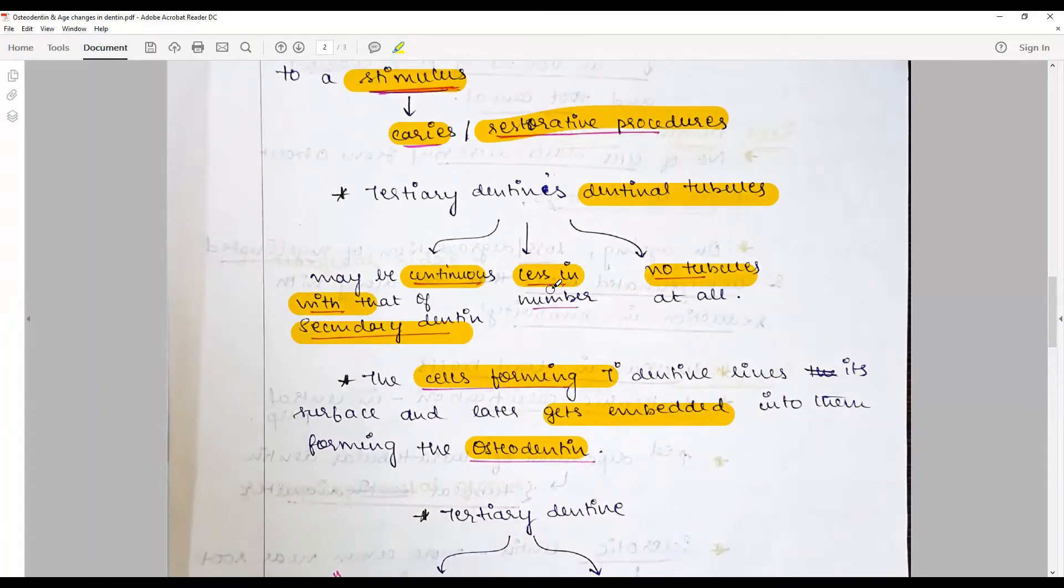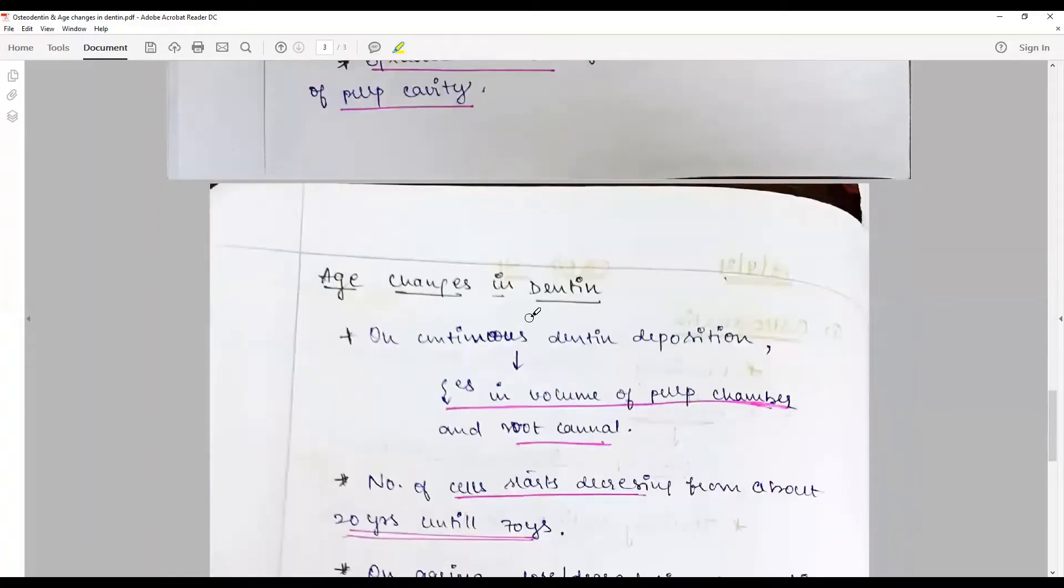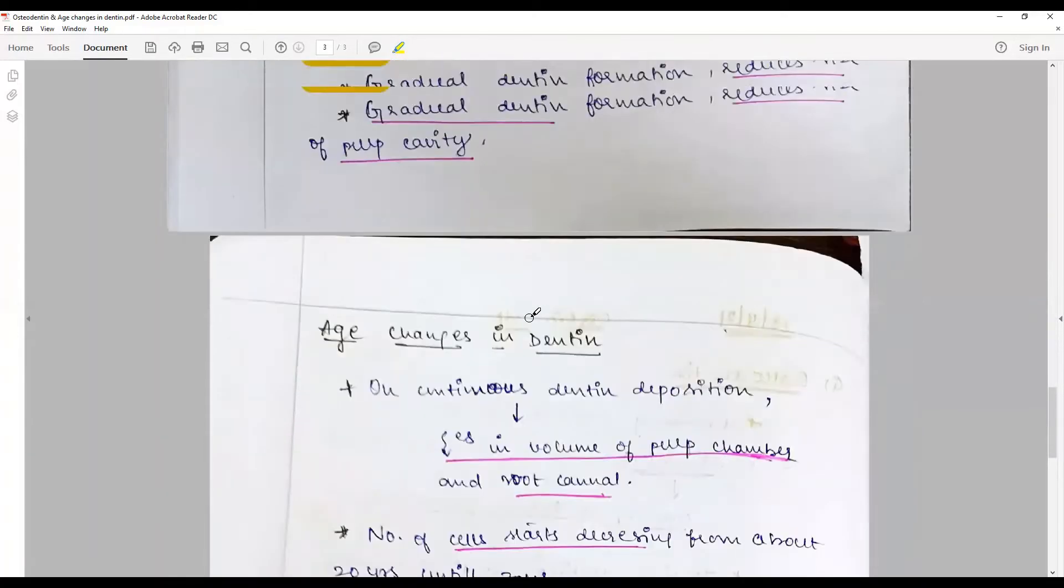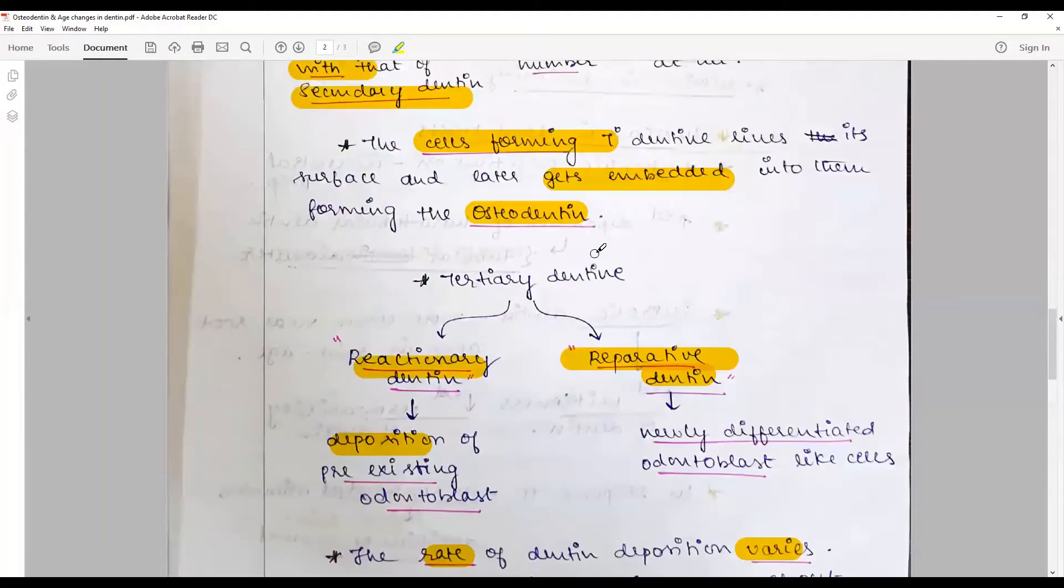A variant—so we have tertiary dentine, you have reactionary dentine, reparative dentine, and osteodentine.